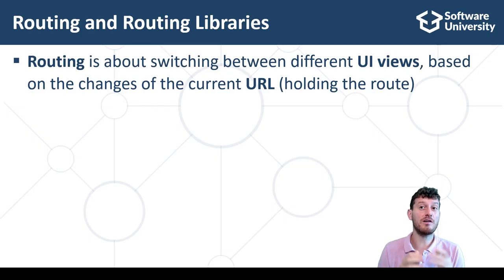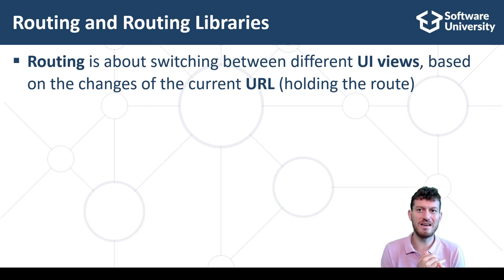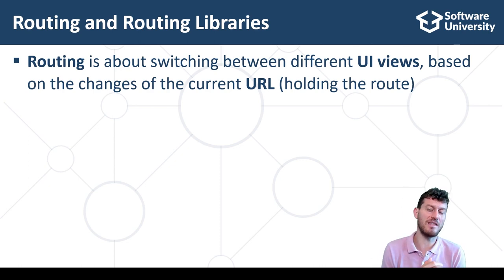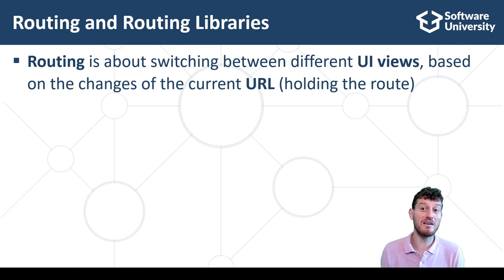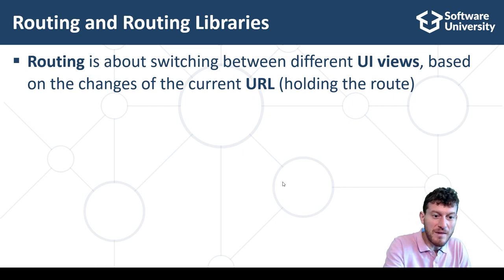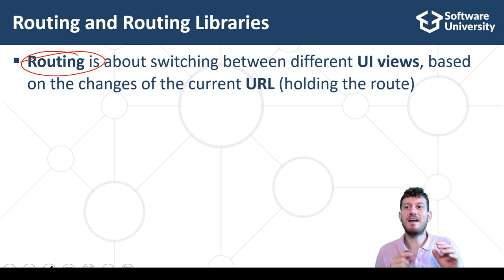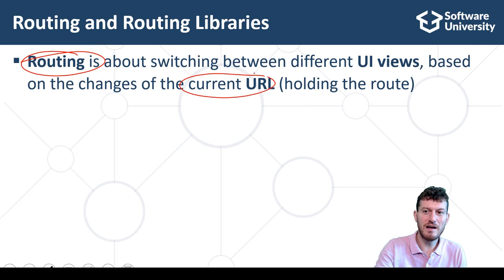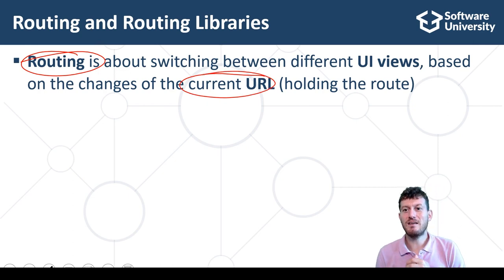In frontend apps, routing is a technology of switching between different UI views based on the changes of the current URL holding the route. In backend apps, routing is a technology of switching between different server-side endpoints based on the changes of the requested URL holding the route. Many frontend and backend frameworks internally implement routing and invoke different functionality based on the URL and its components.